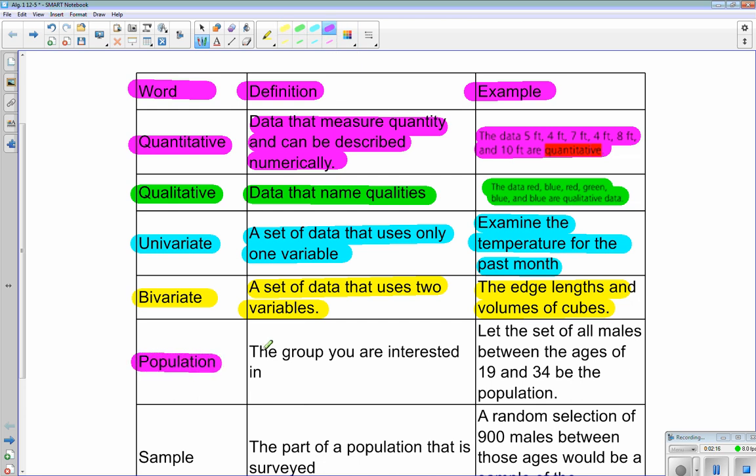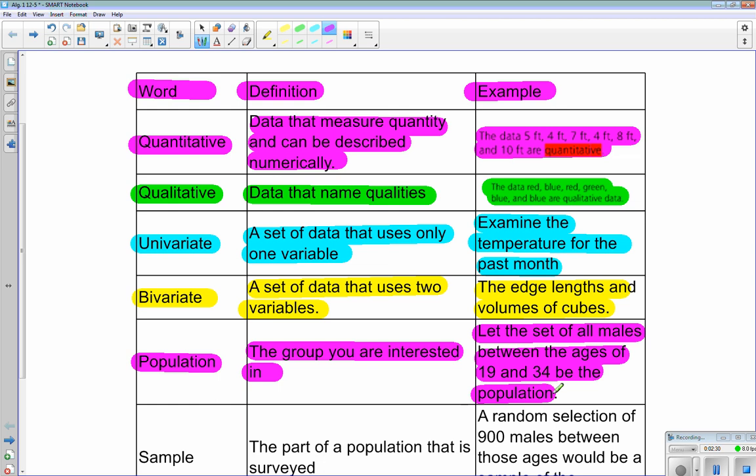Population is the group you are interested in. An example of a population is let the set of all males between the ages of 19 and 34 be the population.